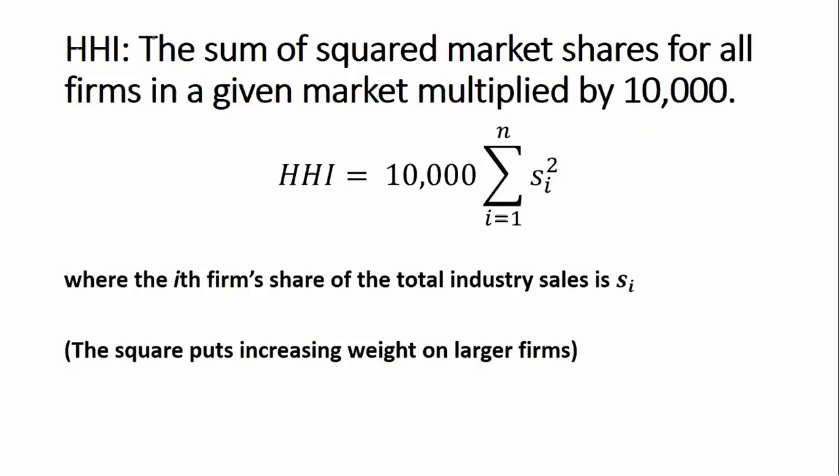The HHI gives the sum of squared market shares for all firms in a given market multiplied by 10,000. Here's the formula: 10,000 times the summation operator, where s_i is the ith firm's share of the total industry sales. So here's s_i - this is a particular firm's share of the industry sales. And then we're going to square it. The reason for the square is it puts increasing weight on larger firms.